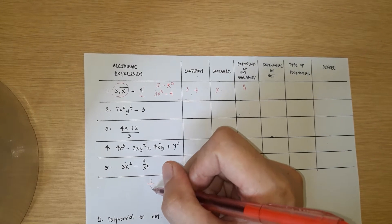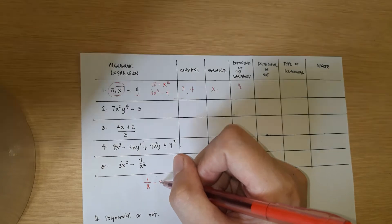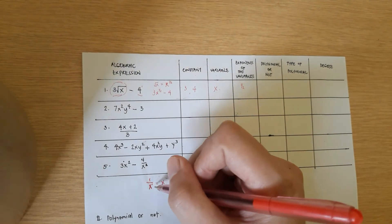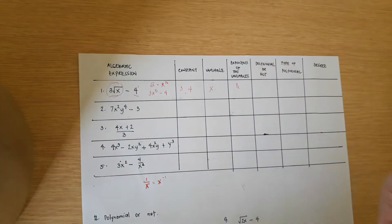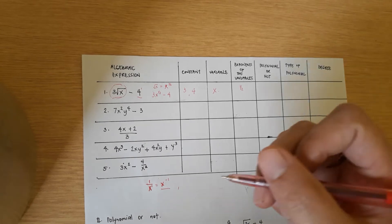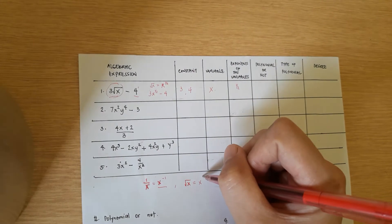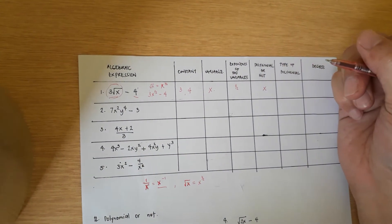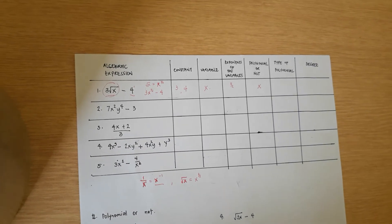A polynomial is valid only when there is no variable in the denominator. If a variable is in the denominator, the exponent becomes negative — for example, x in the denominator means x to the negative 1 — and negative exponents are not allowed in polynomials. Also, the variable cannot be inside a radical sign, because that means the exponent is a fraction, which is also not allowed.